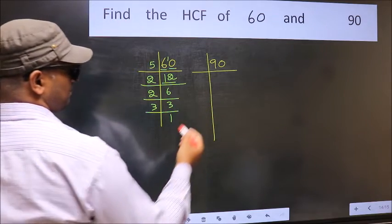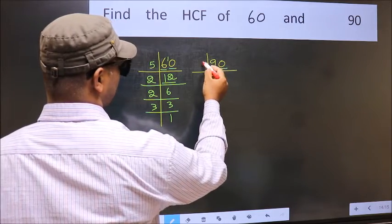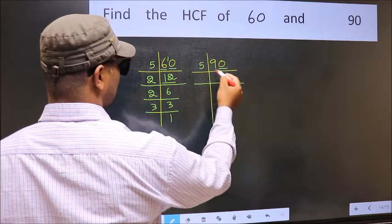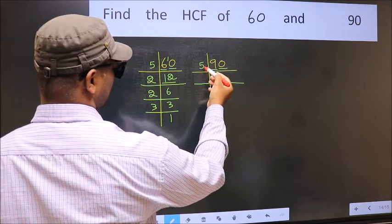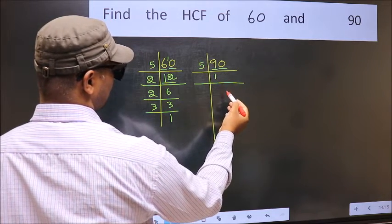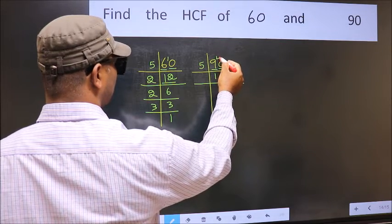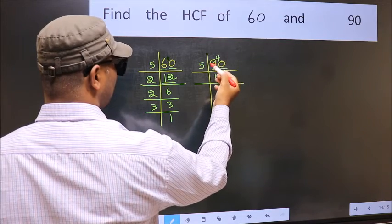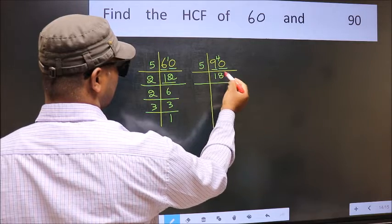Now the other number. Last digit is 0 so take 5. First number 9. A number close to 9 in 5 table is 5 once 5. 9 minus 5 is 4, 4 carried forward 40. When do we get 40 in 5 table? 5 times 8 is 40.